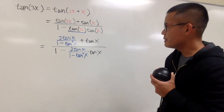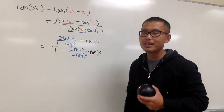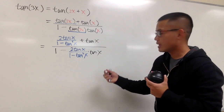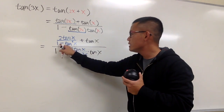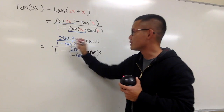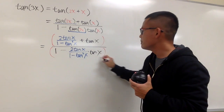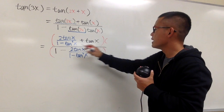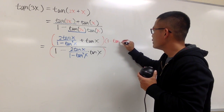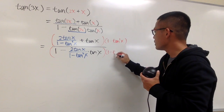Now we have a pretty big complex fraction. However, the fundamental way to fix this is the same — we see that the denominator of the little fractions is (1 minus tangent squared x), so we just go ahead and multiply the top and the bottom by that. So put a parentheses and we will have 1 minus tangent squared x. Do the same thing on the bottom as well.